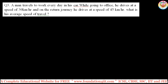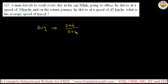Let's start with the shortcut methods. A man travels to work every day: going to office he drives at 30 kilometers per hour, and on the return journey he drives at 45 kilometers per hour. What is his average speed? Do not use the normal average formula like (30 + 45) / 2. Use the formula 2ab / (a + b).